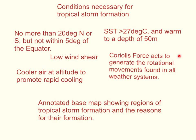The Coriolis force is important because it generates the rotational movement that we find in all weather systems — that's an important factor. Low wind shear is another important condition necessary for the formation of a tropical storm. Wind shear is the extent to which there is lateral variation in the atmosphere as you go up through it. For a hurricane to form, you need a pretty consistent situation going all the way up so that the storm can develop a substantial vertical extent.